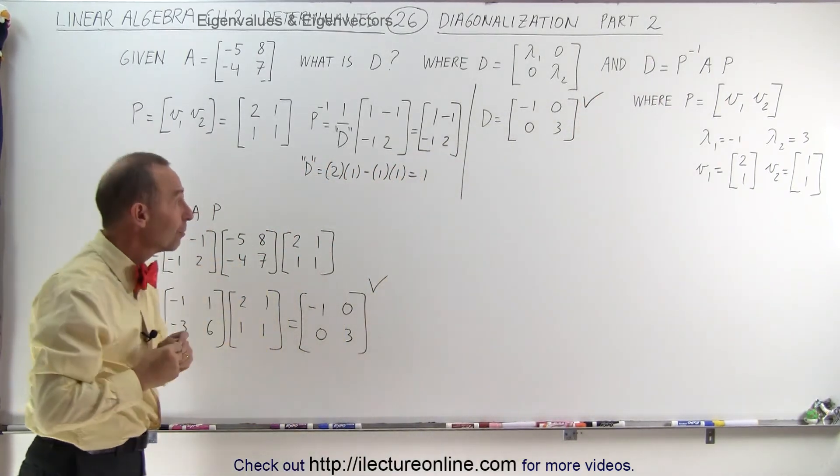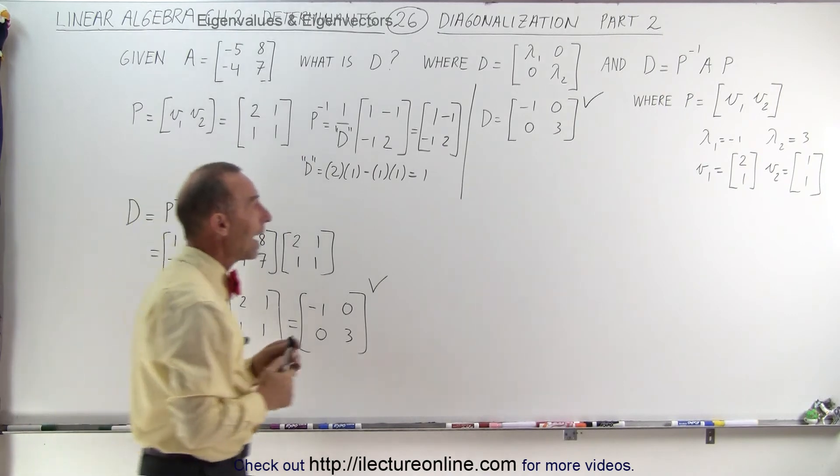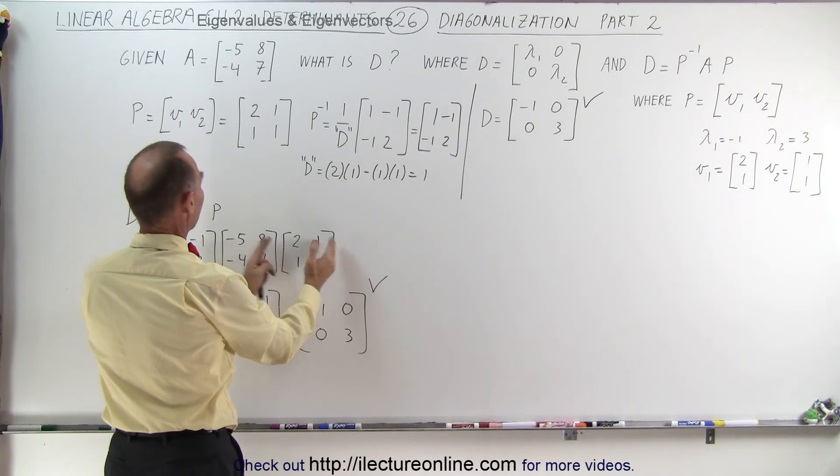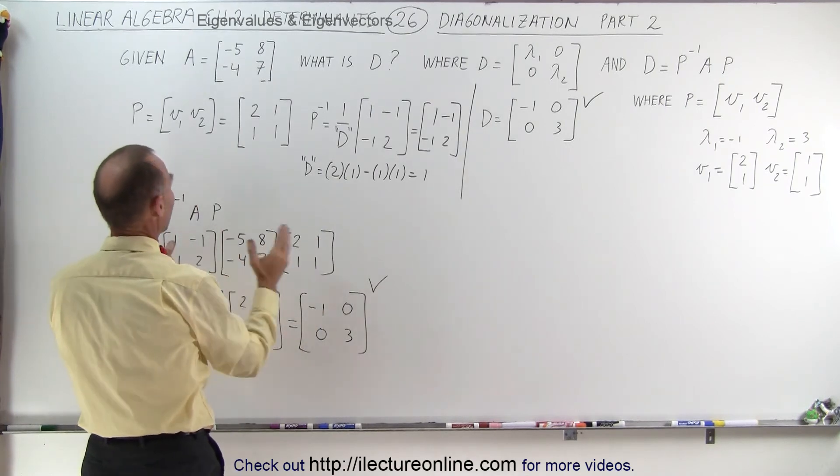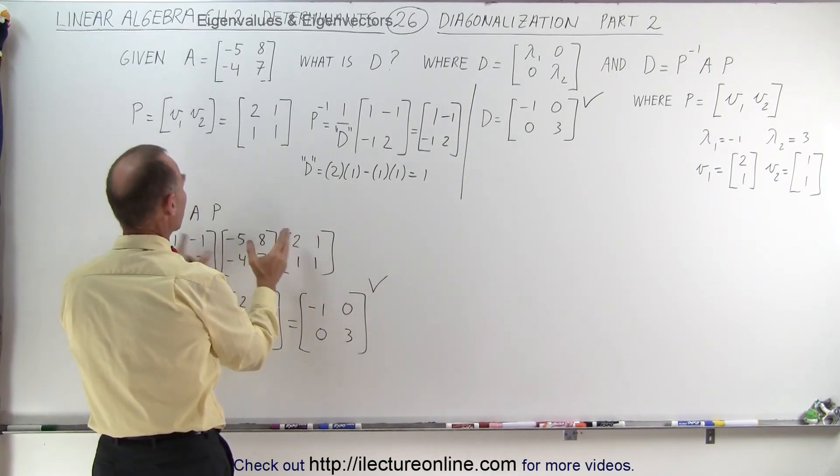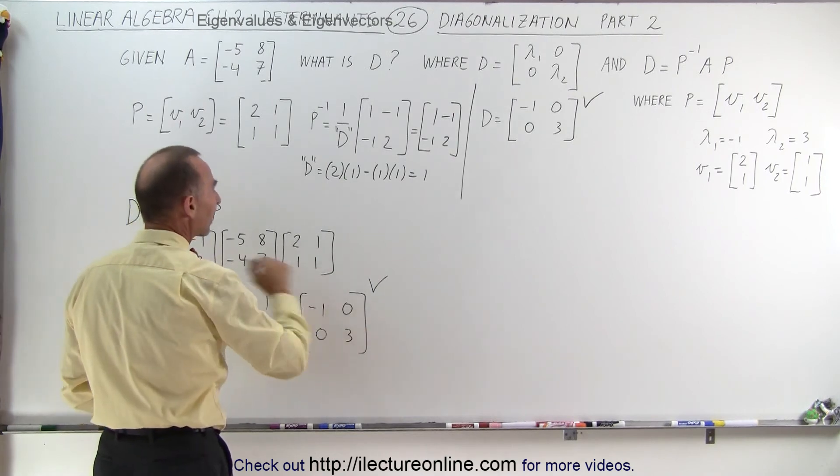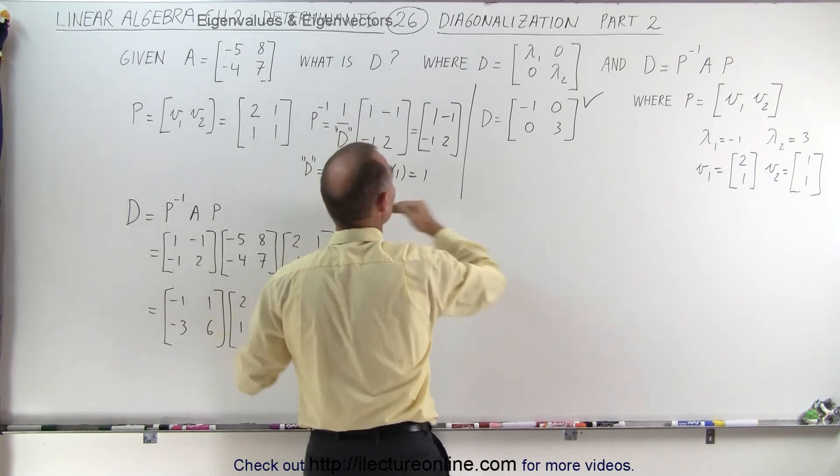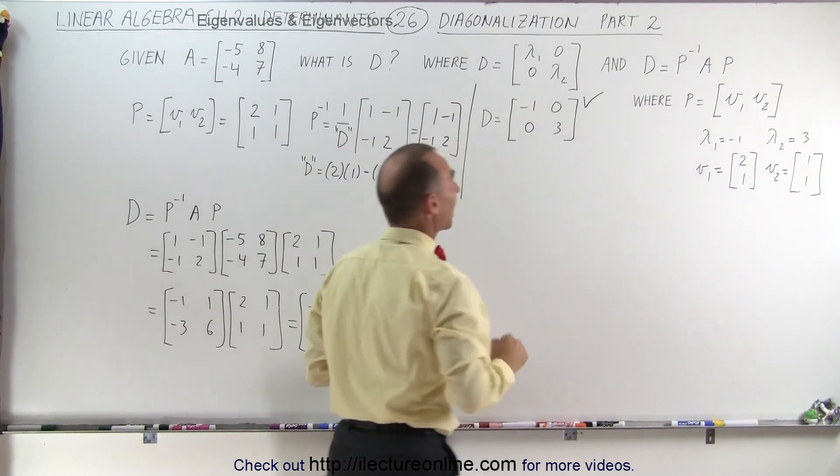So we can find the diagonalized matrix by knowing the eigenvectors, making a matrix out of that, finding the inverse of that matrix and then sandwich the A matrix in between. That will give us the diagonalized matrix, or we can also start with finding the eigenvalues and then simply plugging them in across the diagonal.